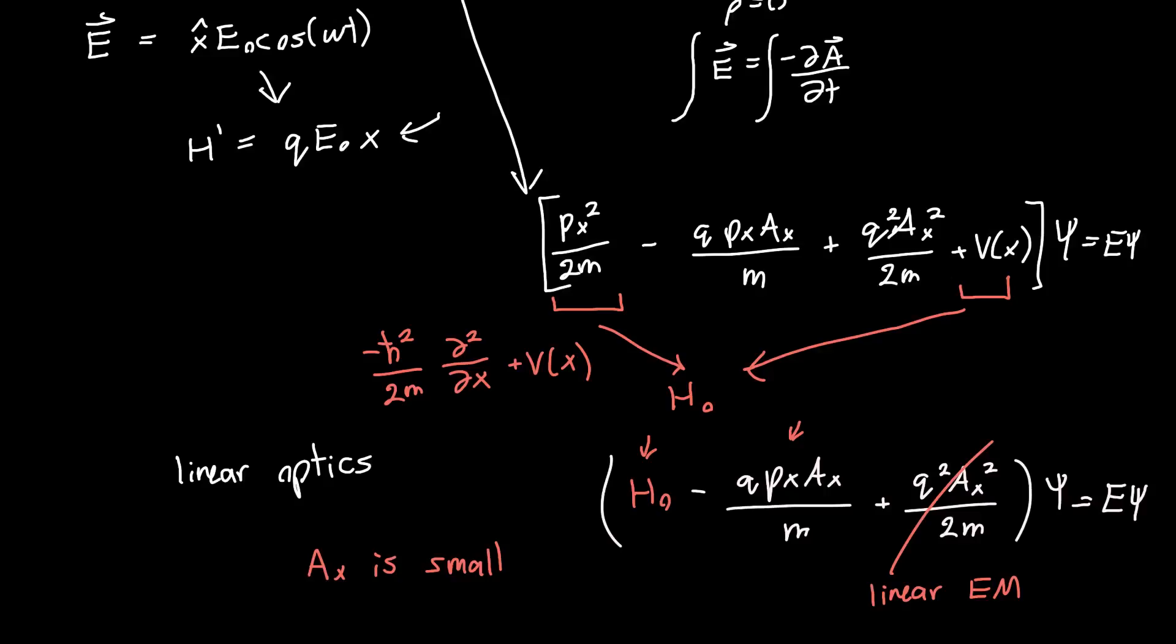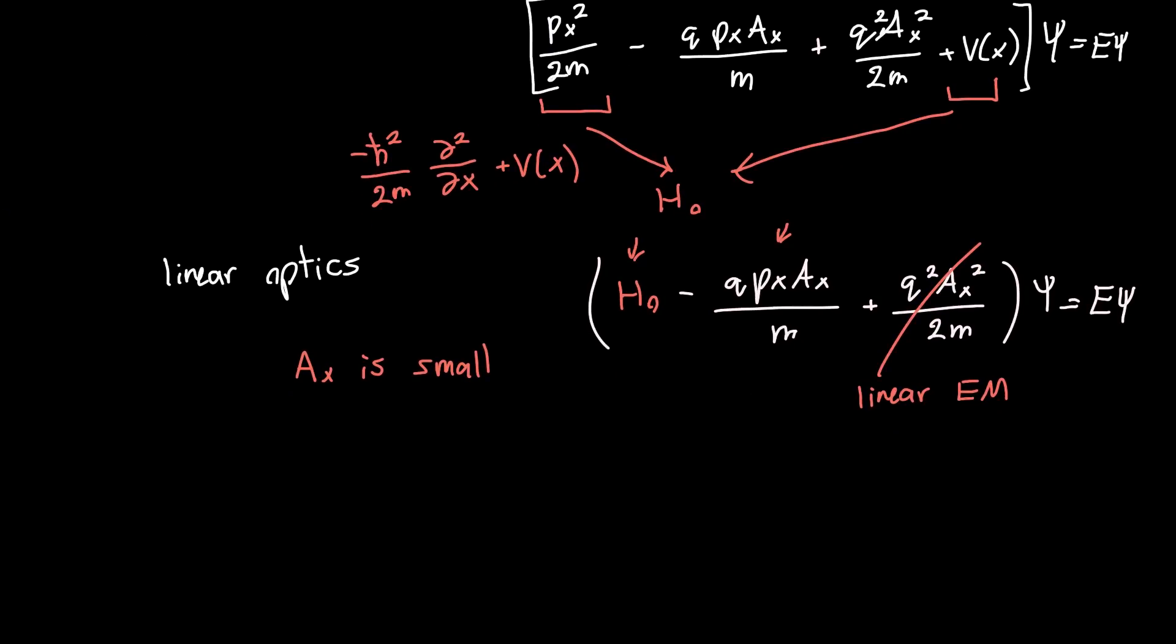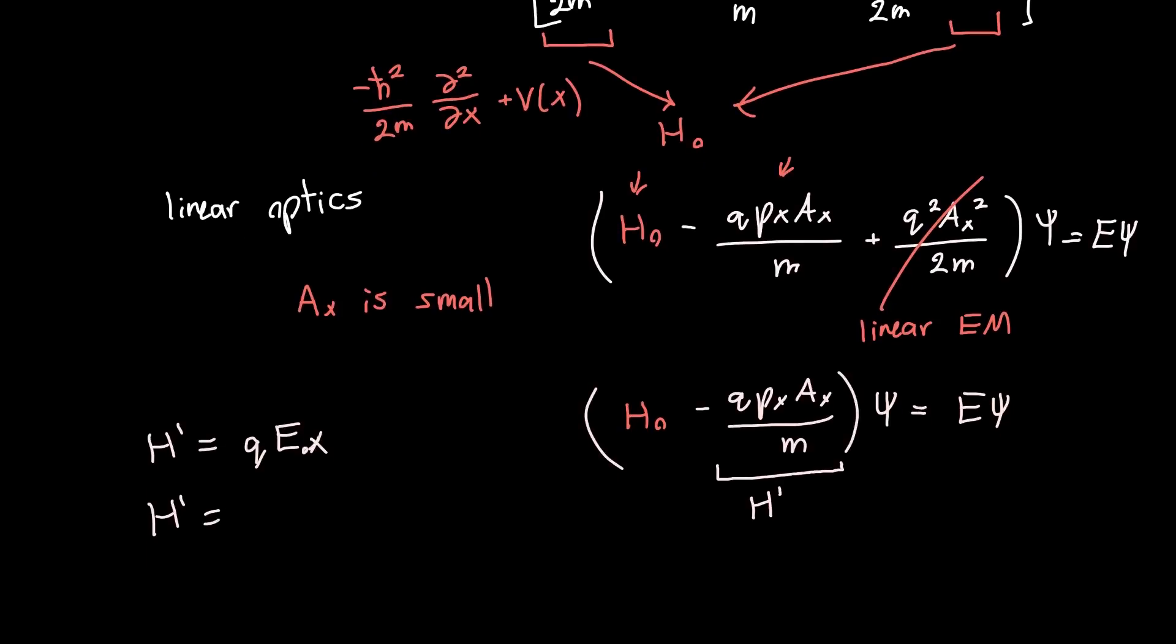So the electromagnetic field isn't interacting with itself to do weird stuff essentially. And so our final Schrodinger equation is just H₀ - qpₓAₓ/m, ψ is equal to Eψ. And so this guy here, we can just look at as our new perturbing Hamiltonian H'. So before we had H' in terms of the position, in terms of x. Now we have H' in terms of momentum, or in terms of the derivative.